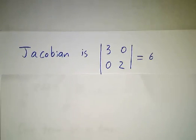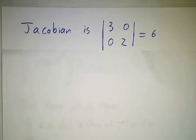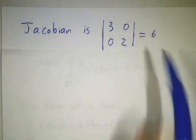So our Jacobian is pretty simple. The derivative of x with respect to u is 3, the derivative of x with respect to v is 0, the derivative of y with respect to u is 0, the derivative of y with respect to v is 2. So that determinant is 6.